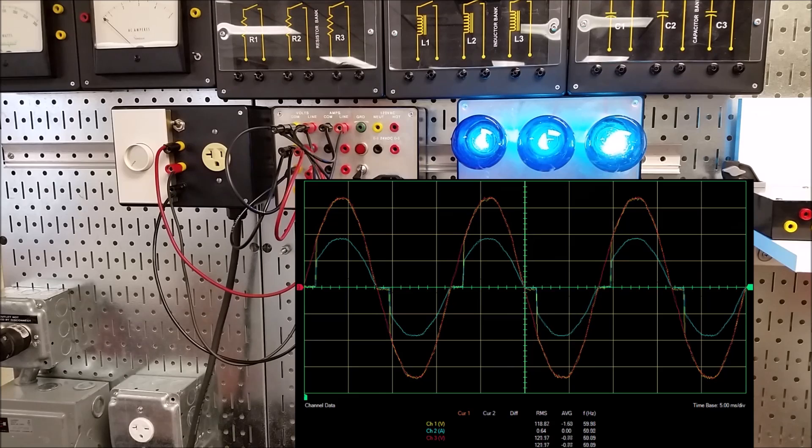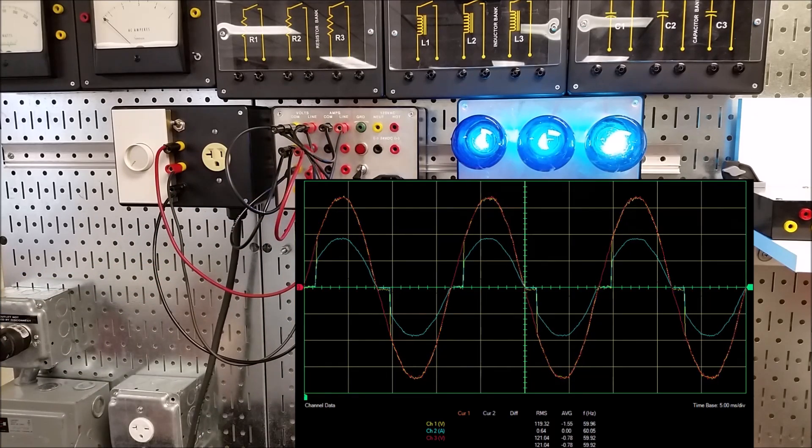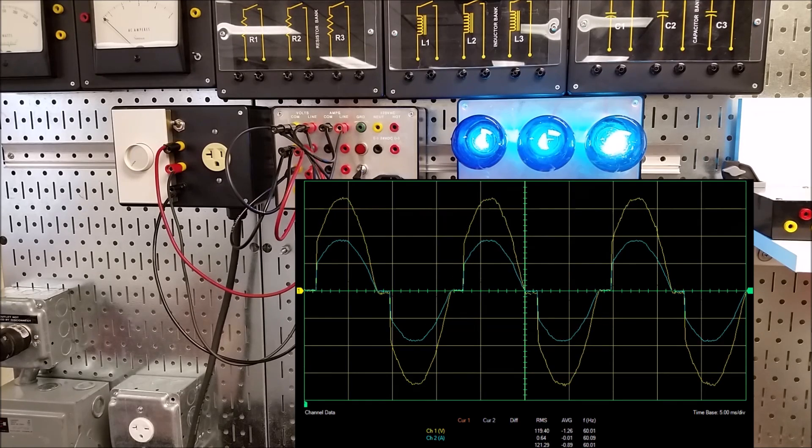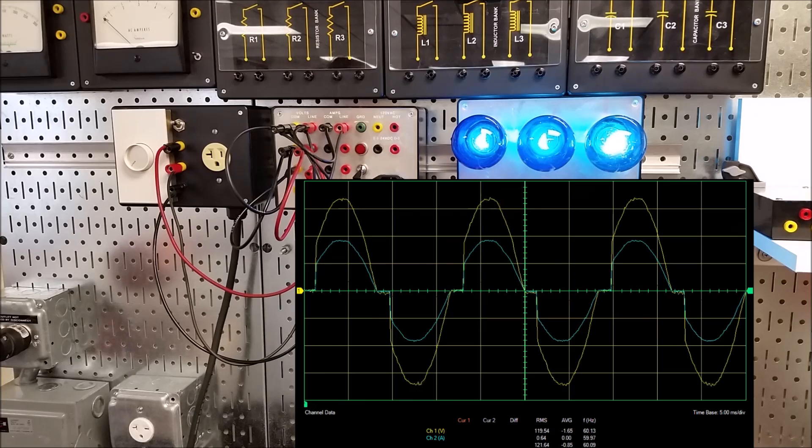I'm going to turn the original sine wave, the one in red, off. And that way you can just see the output by itself. So right now we're at full brightness, and I'm going to turn the red sine wave off. And that way all we're left with on the oscilloscope is the actual output of the dimmer.